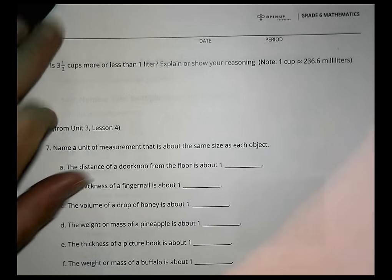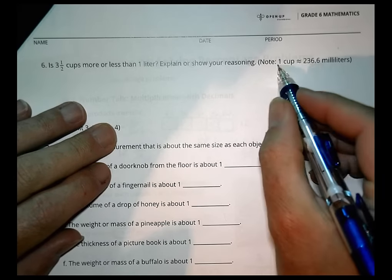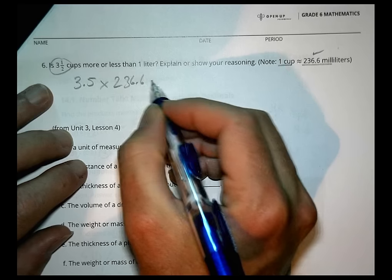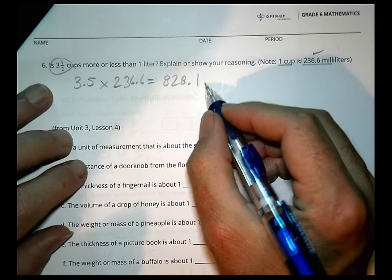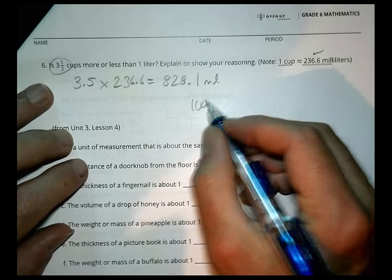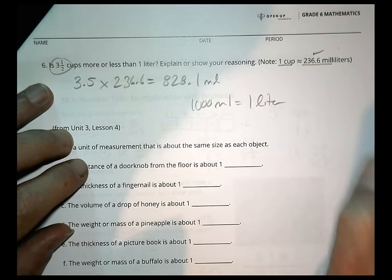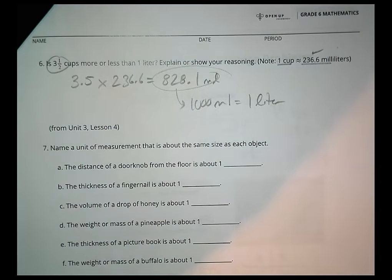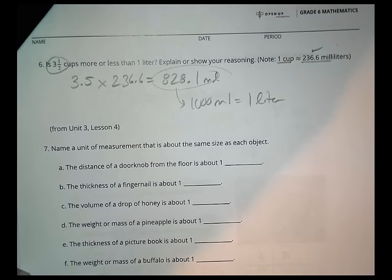We have, is three and a half cups more or less than one liter? Explain or show your reasoning. Note that one cup is 236.6 milliliters. Three and a half cups is the same as 3.5. We know that one cup is that many milliliters. We can multiply that by 236.6. You end up with 828.1 milliliters. Now, I need to have a thousand milliliters equals one liter. So we can see here what? I don't have enough. So that's going to be less.